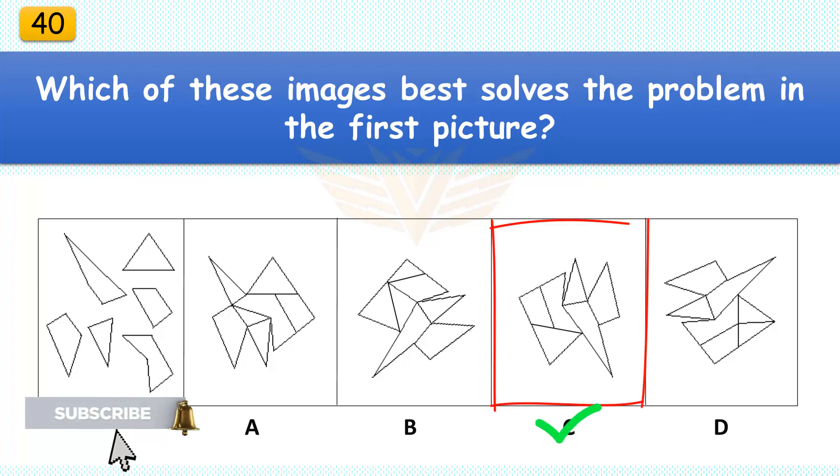Which of these images best solves the problem in the first picture? The correct answer is C. There are six pieces in the assembled puzzle, two of which are triangles.